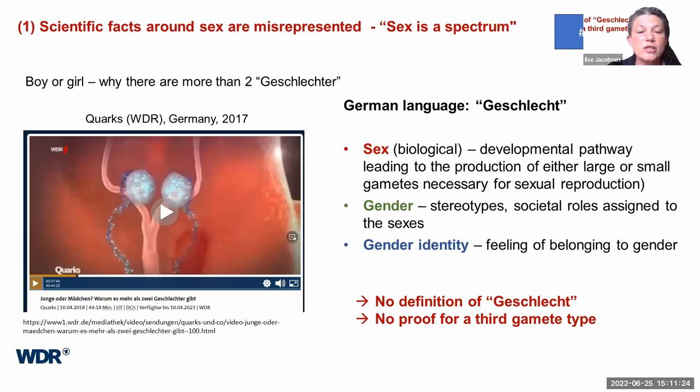Do they mean sex? Do they mean gender? Do they mean gender identity? Do they mean a potpourri of all of that? And if they — as they imply — refer to Geschlecht as biological sex, then it's important to know straight away: there is no proof for a third gamete in scientific literature. So what do they mean with more than two sexes?